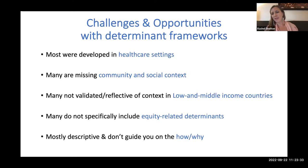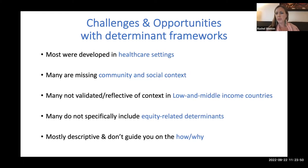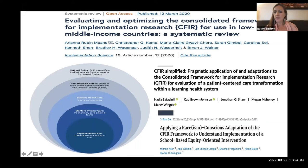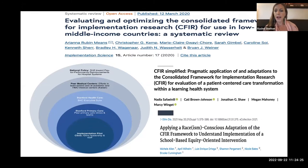There are important problems with our existing determinant frameworks. Most were developed in healthcare settings and often do not really reflect community or social context. Many have not been validated or tested in low- and middle-income countries. A lot of them don't focus on specific equity-focused determinants, particularly among patients or community members, and a lot of them are descriptive — they don't tell you how or why to act on this information. However, there are exciting innovations: modifications of CFIR to address limitations in low- and middle-income countries, applications in learning health systems, versions applying a racism lens, and work within our P50 testing different versions to advance this area.